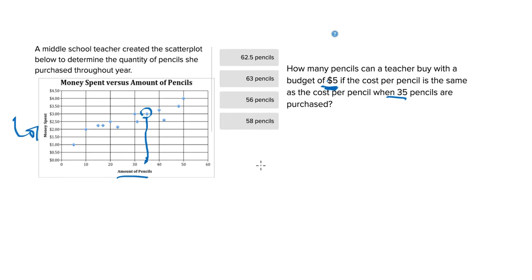So we can set a ratio here where $3 is going to be how much it costs to get 35 pencils, and this ratio is going to hold true also for however many pencils we can get with $5 at that same price.